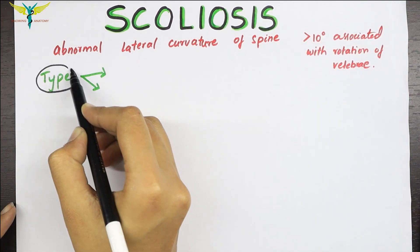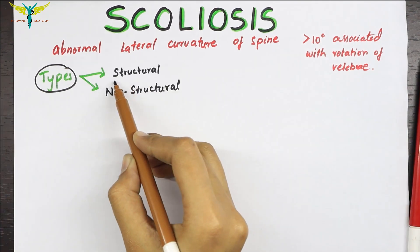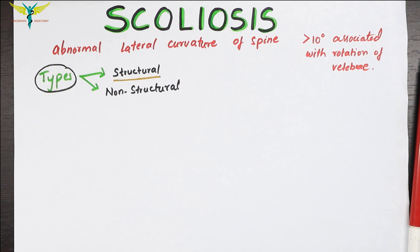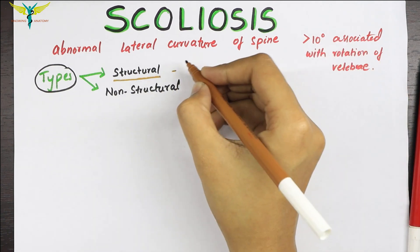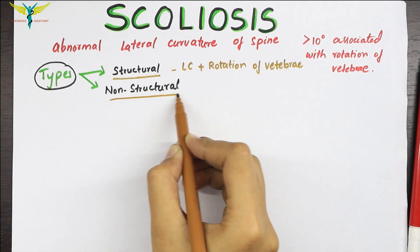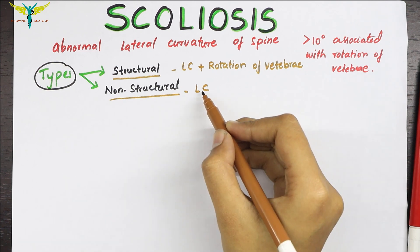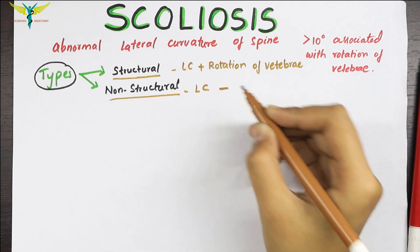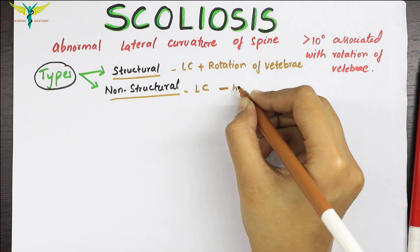Clinically, scoliosis is of two types: structural and non-structural. Structural scoliosis involves both the lateral curvature and the rotation of the vertebrae. Non-structural scoliosis involves a lateral curvature but no structural deformity of the spine, meaning there is an absence of vertebral rotation. This non-structural curvature is usually seen in response to a habit or a disease.